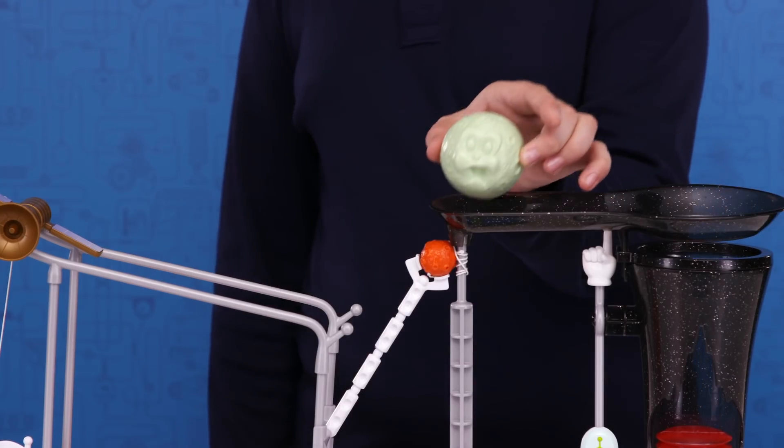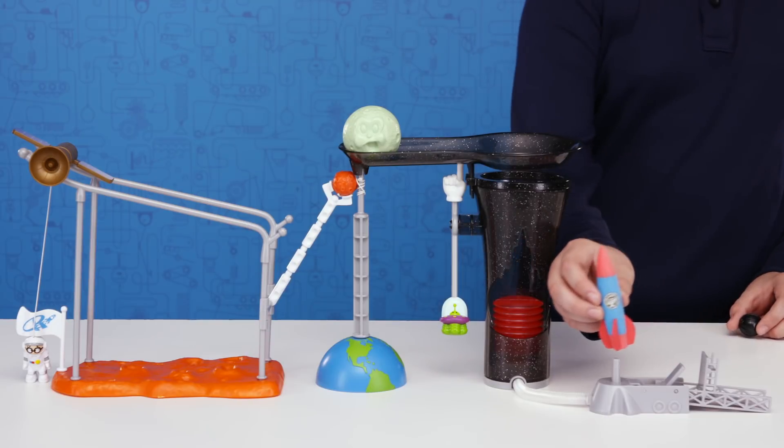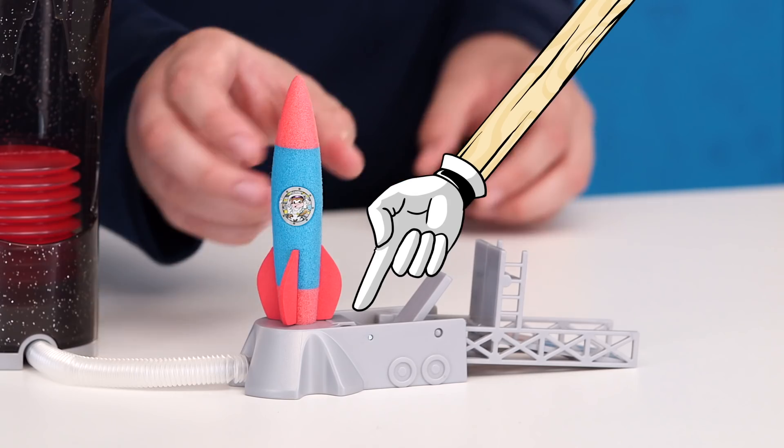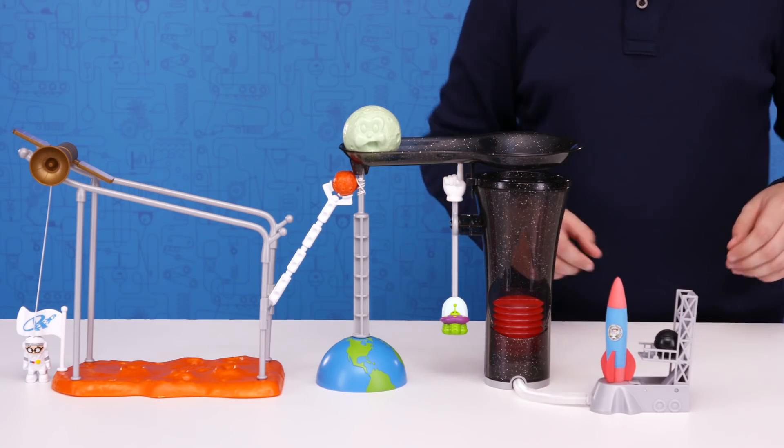Now place the moon onto the moon ramp. Be sure to have him face forward. Now we can load the rocket. Be sure to line up one of the rocket fins over the launch plate. Lift the launch tower and place the ball in and you're loaded and ready for a launch.